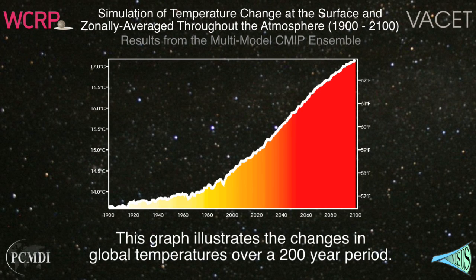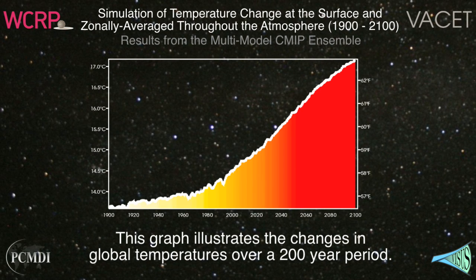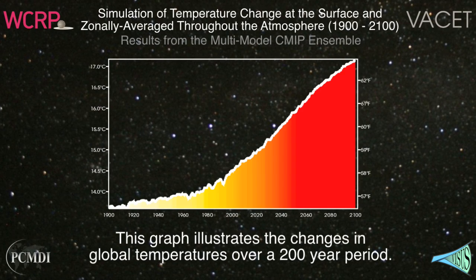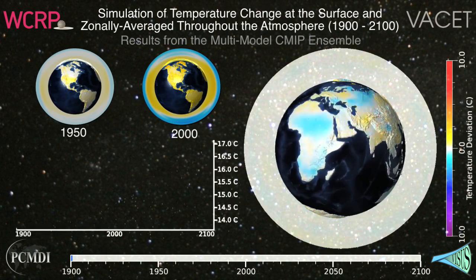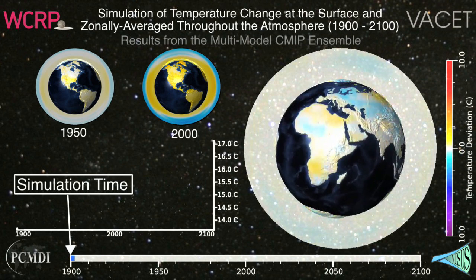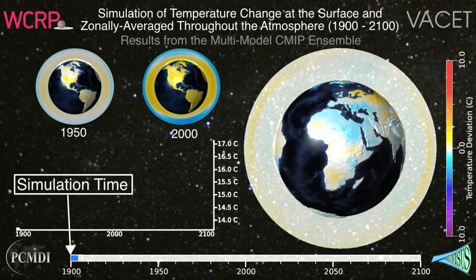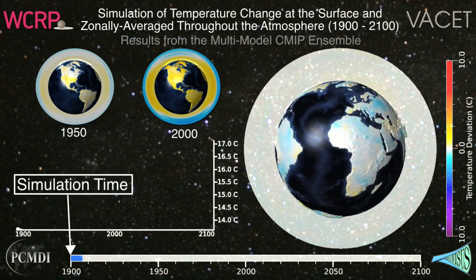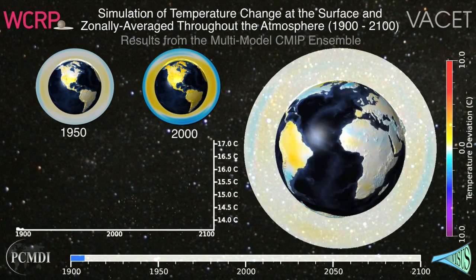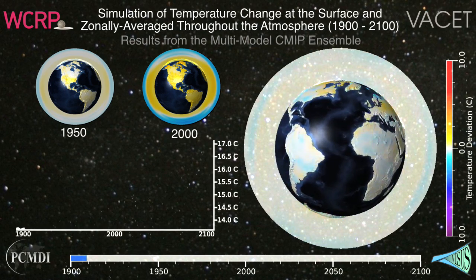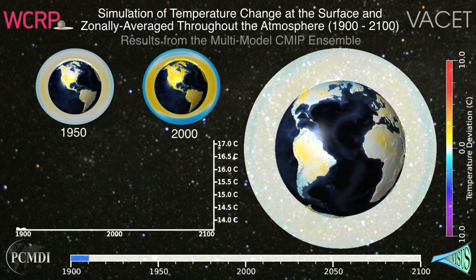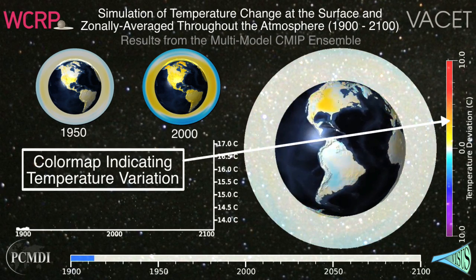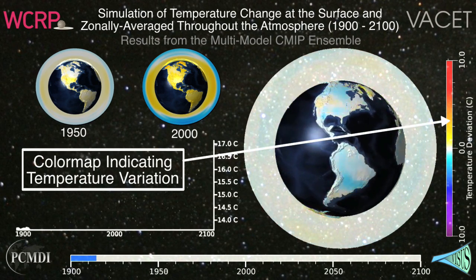This graph illustrates the changes in global temperature over a 200-year period. The progress bar illustrates the movement in the simulation over time. The color map on the right indicates temperature variation.